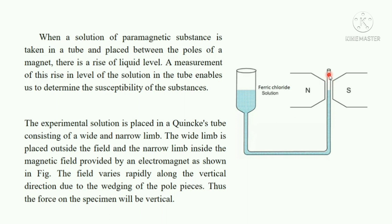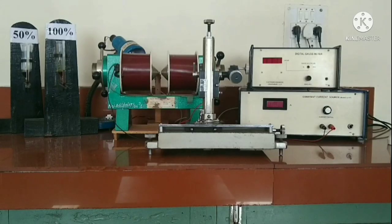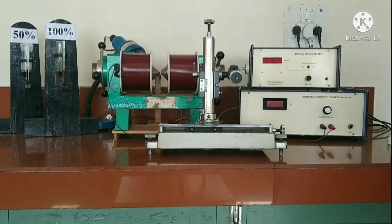The formula used for finding the mass susceptibility for the liquid is: χₘ = 2μ₀gh / B², where μ₀ and g are constants, h is the rise in the liquid level in meters, and B is the magnetic field applied in Tesla.